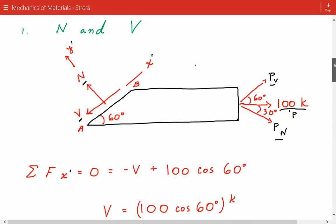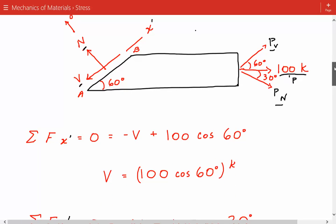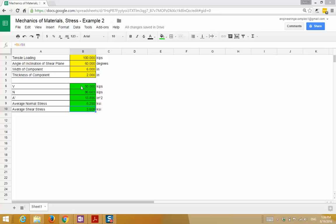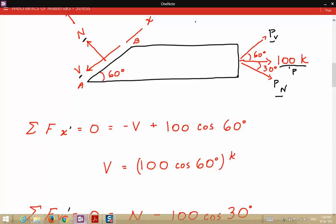So we sum the forces in the X prime direction to find the shear force acting on the plane. And we find that the shear force is equal to 100 times cosine of 60 degrees. And that is equal to 50 kips.